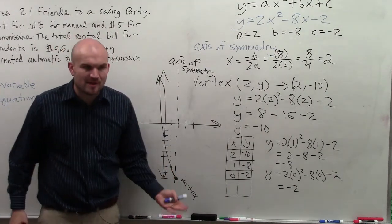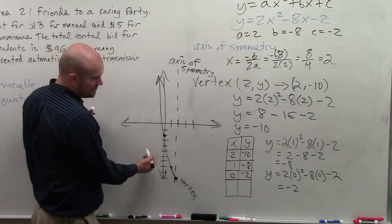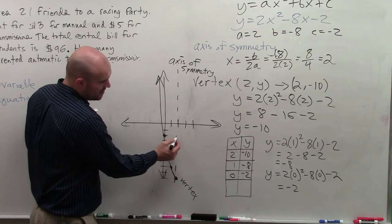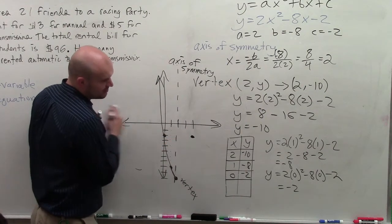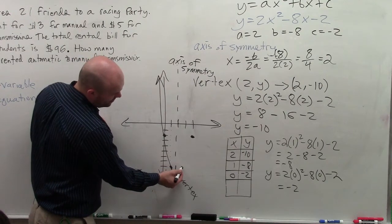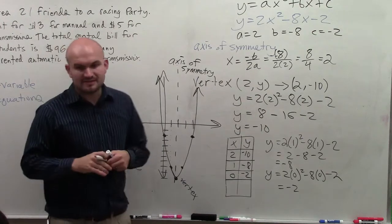So now I have half of my graph. So to find the other half of my graph, I need to reflect these over. So you can see this is 2 away from the axis of symmetry. So I need to go another 2 more over to get that one. This is 1 away from the axis of symmetry. So I go 1 the other way. And now I've graphed it.